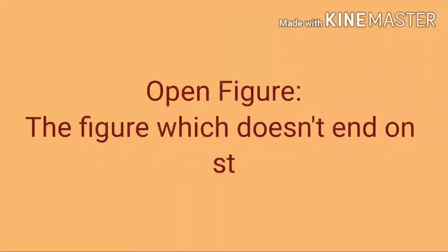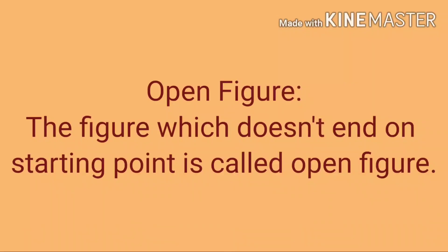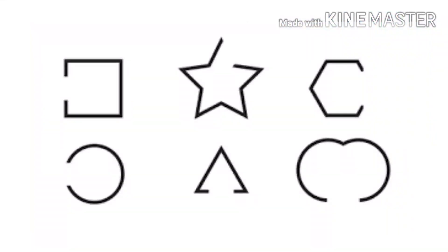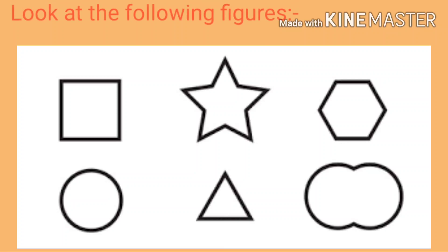So we can easily say that an open figure is the figure which doesn't end on the starting point. For example, some figures are given here. Look carefully — there is no end point which is on the starting point. So these all figures are open figures, and there is also one leakage in each of the given figures.